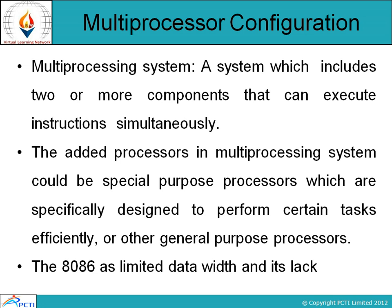First, multiprocessor configuration. A multiprocessing system is a system which includes two or more components that can execute instructions simultaneously. The added processors in a multiprocessing system could be special purpose processors, which are specially designed to perform certain tasks efficiently, or other general purpose processors. Different processors can be added to the system for performing different tasks.